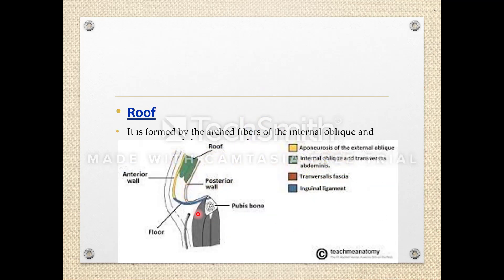The roof of the inguinal canal is formed by the arched fibers of the internal oblique and the transversus abdominis muscles. This is a very important point — the roof is formed by the arched fibers of these two muscles.